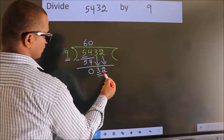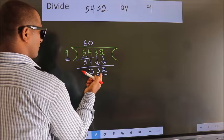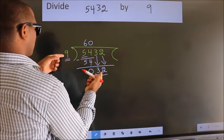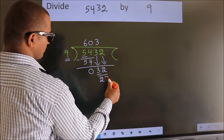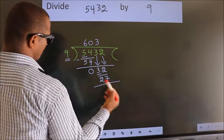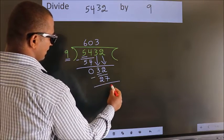So, 32. A number close to 32 in 9 table is 9 threes, 27. Now we subtract. We get 5.